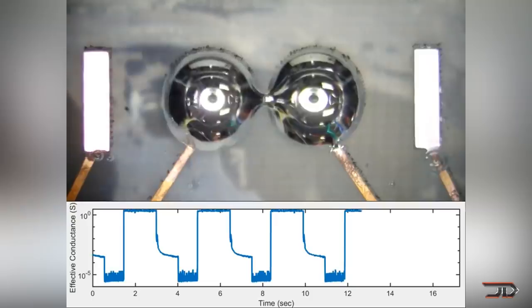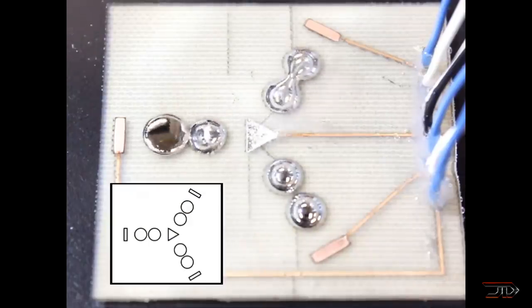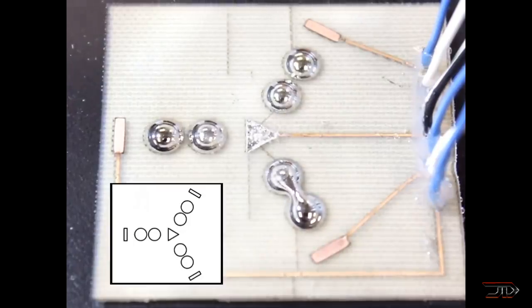When the voltage drops in one direction, the droplets close together. And once the voltage is applied in a different direction, the droplets open up.